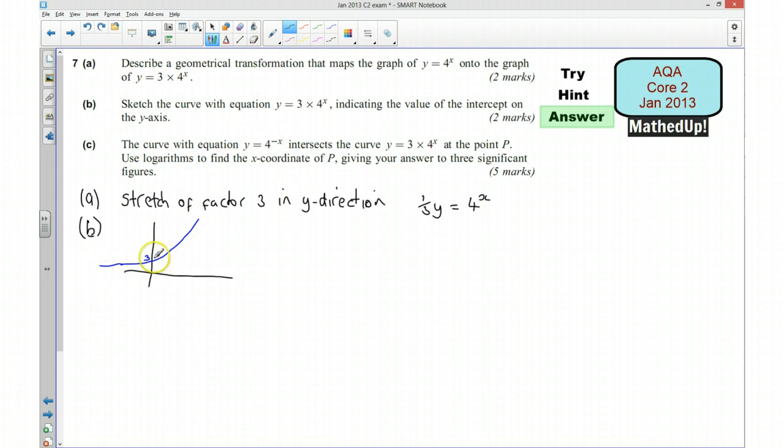OK, and that's enough for us. As long as we've got the shape there and we've not crossed the x-axis, and we've marked on that it passes through the y-axis at 3, that will be enough to get us two marks.